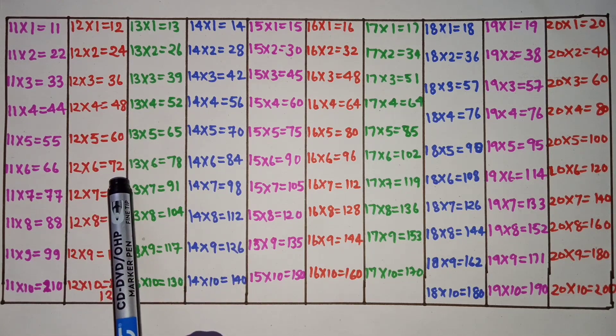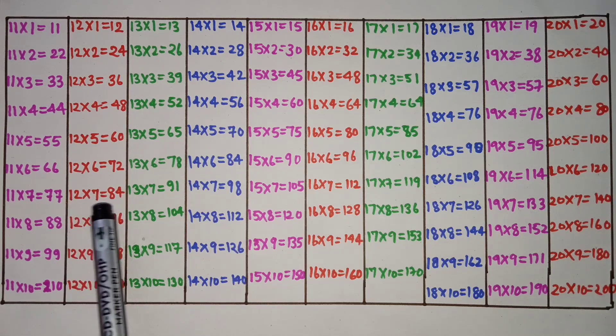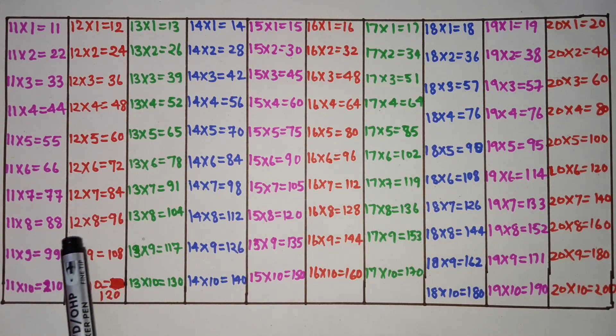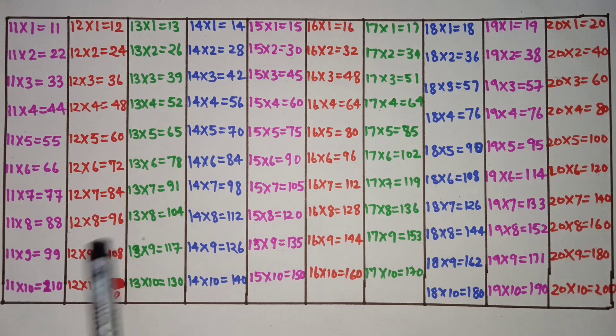12 fives are 60, 12 sixes are 72, 12 sevens are 84, 12 eights are 96.